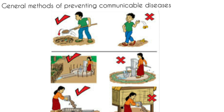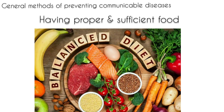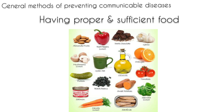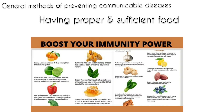Secondly, we can avoid communicable diseases by having proper and sufficient food. The functioning of the immune system is dependent on the type of nutrients the body receives. Thus eating a balanced diet is necessary for the prevention of disease — a diet which will have enough nutrients, vitamins, and various other factors responsible for boosting our immunity.